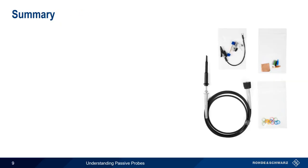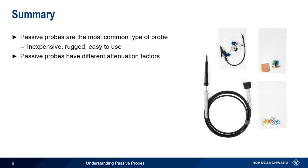So let's summarize what we've learned. Passive probes are the most common type of oscilloscope probe. They're inexpensive, rugged, and easy to use in a wide variety of applications. The biggest differentiator between passive probes is their attenuation factor, or how much the probe attenuates, or reduces, the level of the signal reaching the scope.